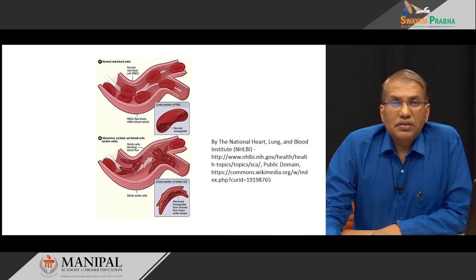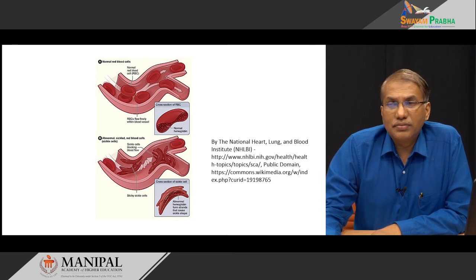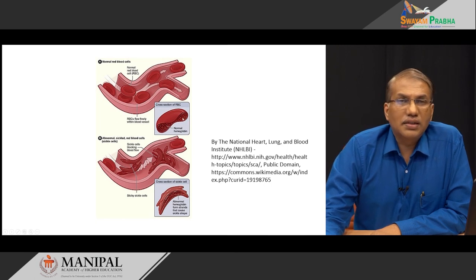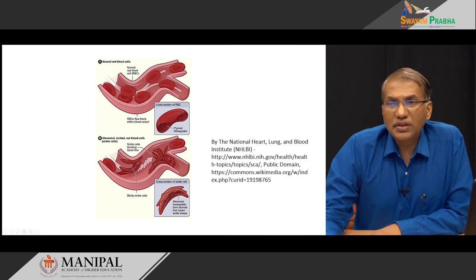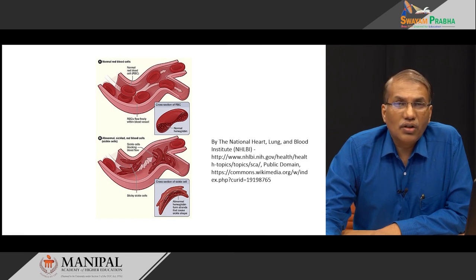We will discuss predominantly sickle cell anemia, because this is one of the important hemoglobinopathies which severely affects the functioning of RBCs. The first picture shows normal RBCs moving in the blood vessels freely without any problem. If you take a cut section of this RBC, normal hemoglobins are uniformly distributed inside, maintaining the normal shape and not affecting its function whether in oxygenated or deoxygenated state.